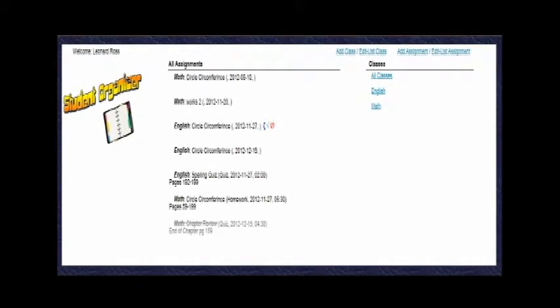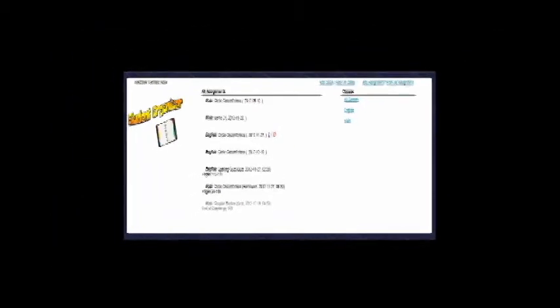This is the screen students will see after they log in. On the left-hand side, you see your name and a little logo. Down the middle will be any current assignments that are coming up or are due. Down the right-hand side gives you the list of classes that you added. On the top right-hand corner, you can add a class, edit a class, or delete a class. To the right of that, you can add an assignment for each class.